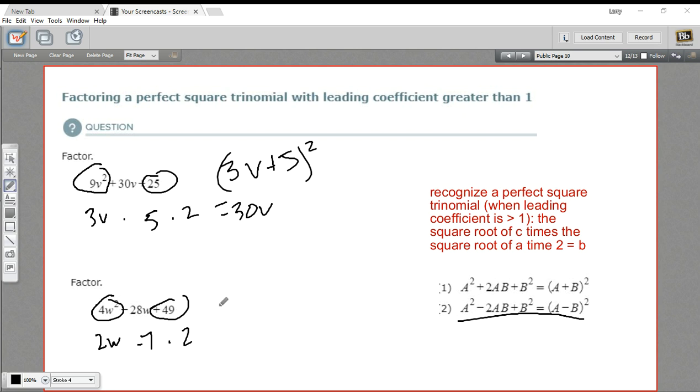And we take the square root of the first part, 2w. We subtract the square root of the second part, 7. And we square it.